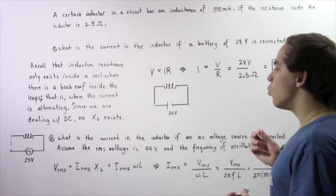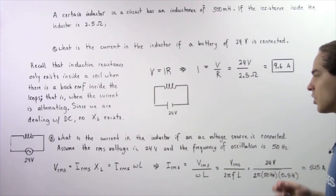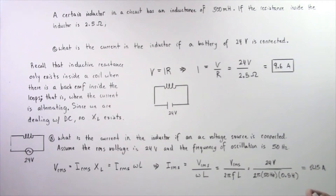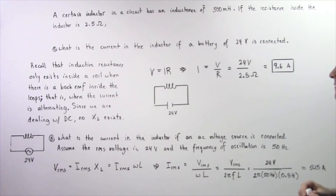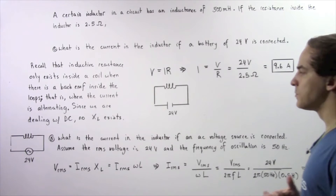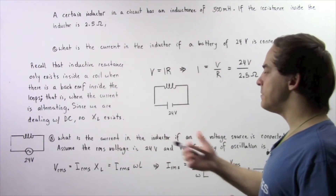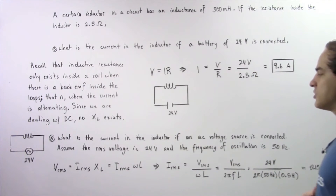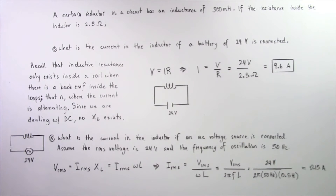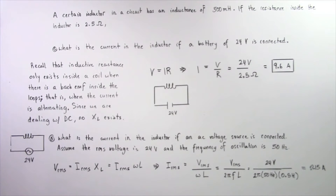And in part B, what is the current in the inductor if an AC voltage source is connected instead of our battery? Assume that our root mean square voltage is 24 volts and the frequency of oscillation of our circuit is 50 hertz.